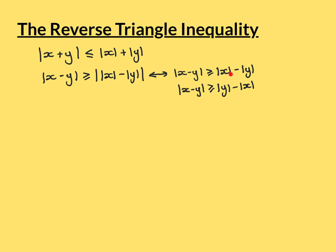I can conclude that the main triangle inequality being true implies this first statement is true because the mod of x minus the mod of y is always going to be less than or equal to the mod of the mod of x minus the mod of y. Consider this value: it's either going to be a positive real number, in which case taking the modulus has no effect; or zero, in which case taking the modulus also has no effect; or a negative number, in which case taking the modulus makes it bigger. Ergo, the modulus of mod x minus mod y is always greater than or equal to mod x minus mod y. All I need to do now is apply transitivity to conclude the first statement.